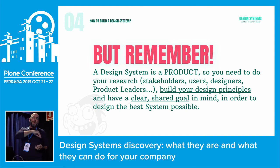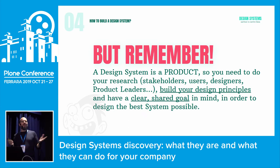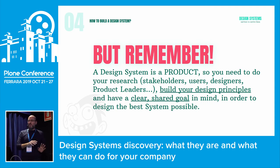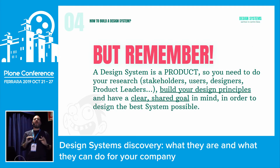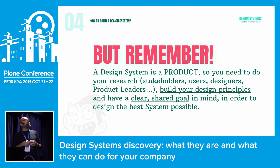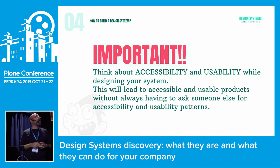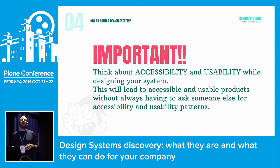Then build your design principles as we've seen before. What are your principles? Do you want the UI to be beautiful? Accessible? Usable? Inclusive? Your design principles have to be really clear for everybody, so the designer has some basic rules when starting to build the design system, and a clear shared goal. It's really important that you think about accessibility and usability while building your system, not after. When the system is in place, it's too late — you can do it, but it's not best practice.